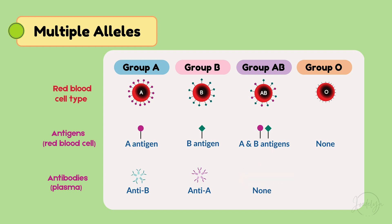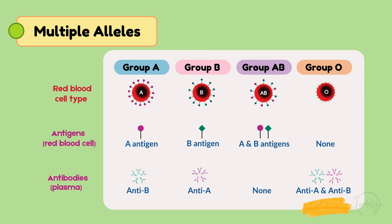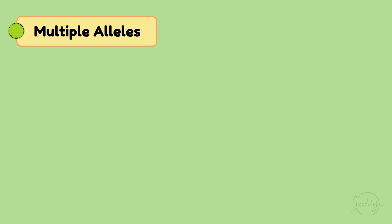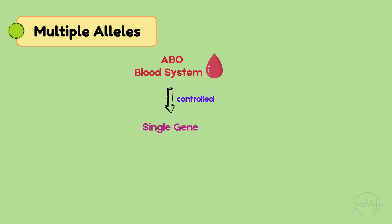Type O has both anti-A and anti-B antibodies, so it can only receive from O but can donate to anyone. That's why O is the universal donor. The ABO blood group system is controlled by a single gene with three different alleles.